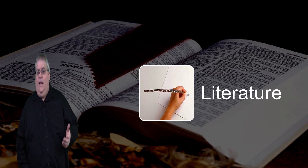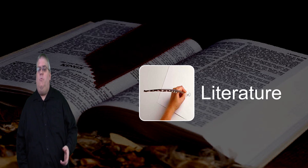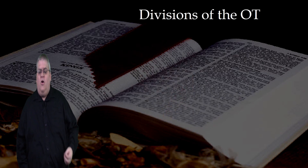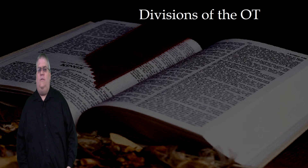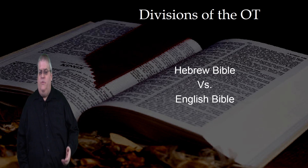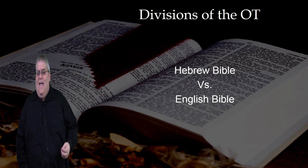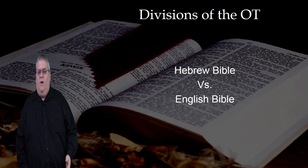The Old Testament is actually a library of 39 separate books, but these books can be grouped together in common categories to help us get a sense of the whole. Historically, there have been two different ways to categorize the Old Testament books. The Hebrew Bible — the Bible that the Jews of Jesus' day and modern Jews use — has the same books as the English Old Testament that you and I read, but in a different order and arrangement.